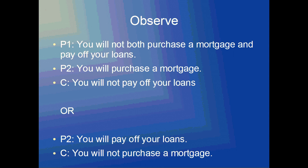So I think converting to a conditional or disjunctive syllogism makes that interpretation less likely. The first premise of the conjunctive syllogism is: you will not both purchase a mortgage and pay off your loans. The second premise is: you will purchase a mortgage. Confirming that possibility in the second premise is supposed to deny the other possibility in the conclusion — we're saying you will not pay off your loans. Or if instead the second premise confirms that you will pay off your loans, that eliminates the possibility that you will purchase a mortgage, so the conclusion becomes: you will not purchase a mortgage.